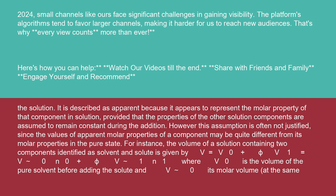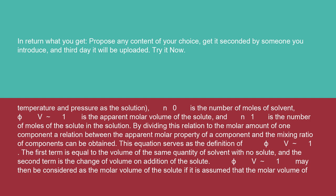For instance, the volume of a solution containing two components identified as solvent and solute is given by V = V₀ + φV₁, where V₀ is the volume of the pure solvent before adding the solute and V⁰ its molar volume at the same temperature and pressure as the solution. N₀ is the number of moles of solvent, φV₁ is the apparent molar volume of the solute, and N₁ is the number of moles of the solute in the solution. This equation serves as the definition of φV₁.